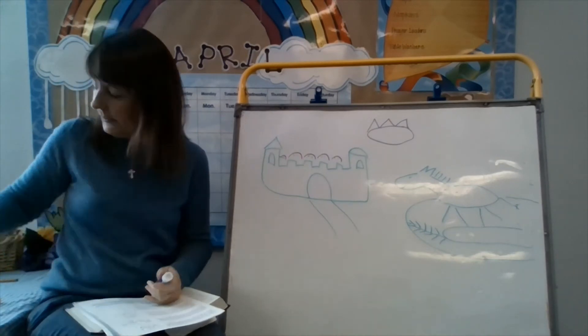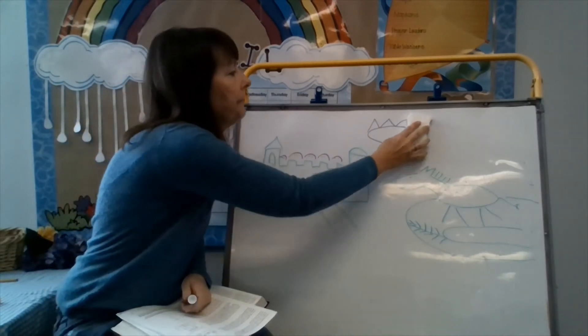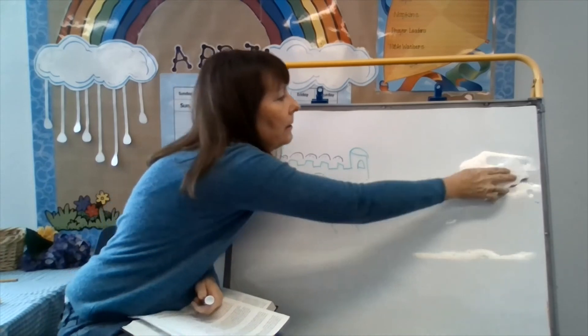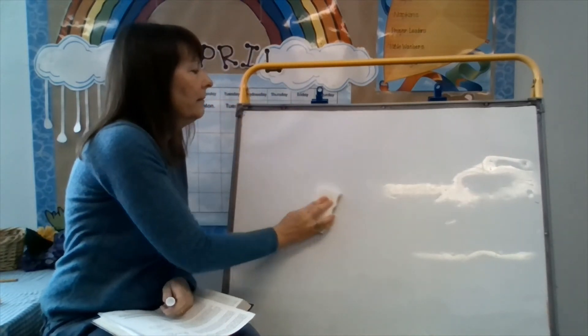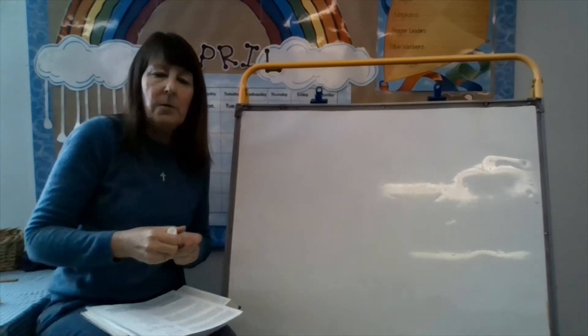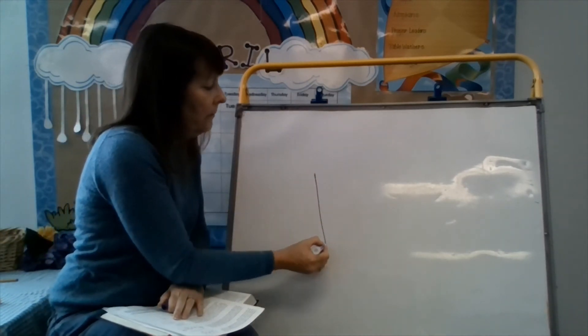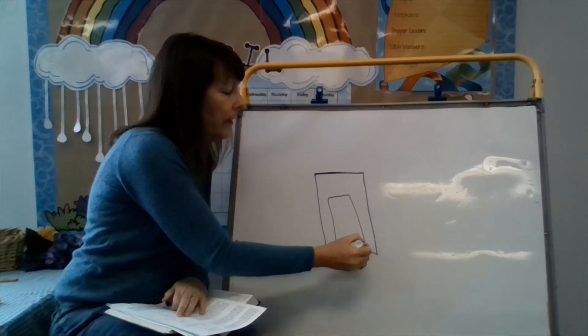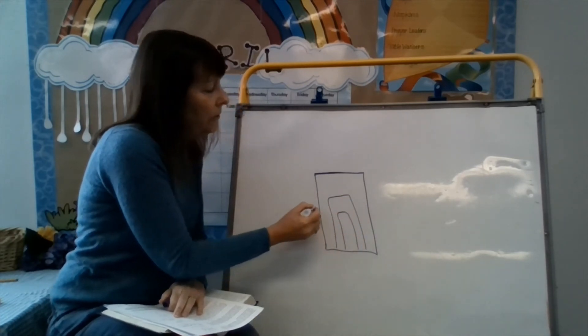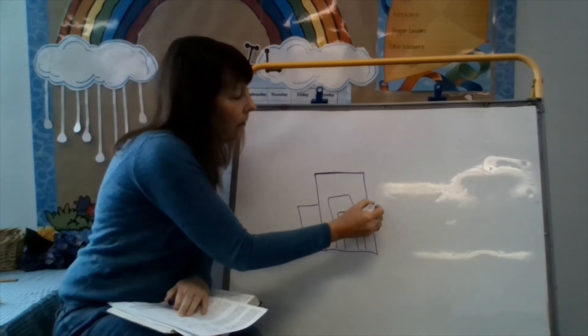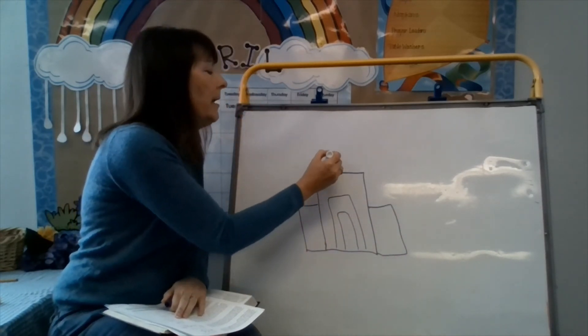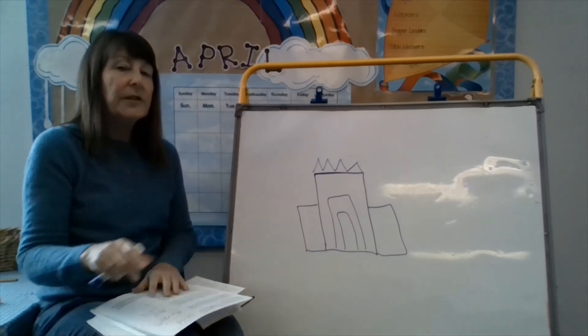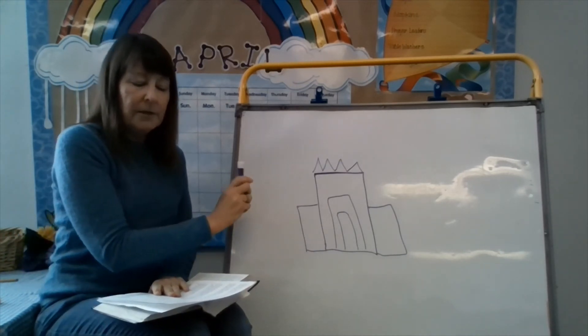Jesus rode through the shouting, singing crowds and it seemed like everyone had come to greet the king. Now I need to make a little space so I'm going to erase a few things. Bye bye donkey. Now you can draw a big rectangle and some more rectangles on the inside. Do you know what I'm drawing?